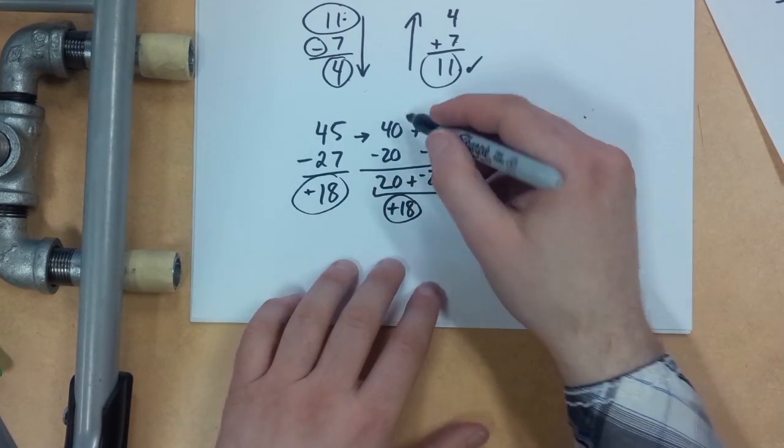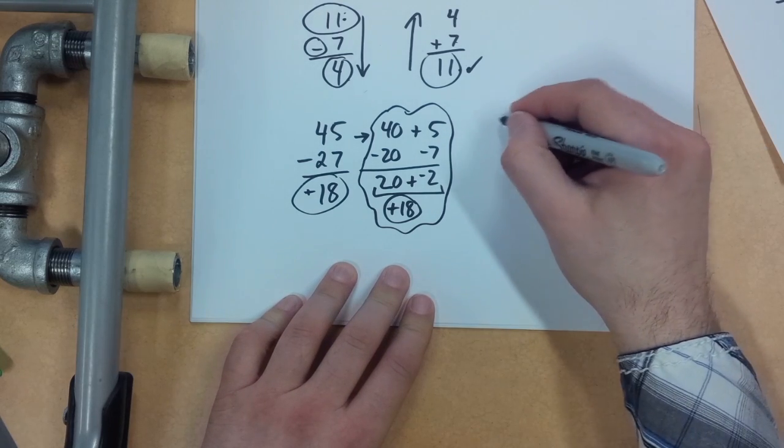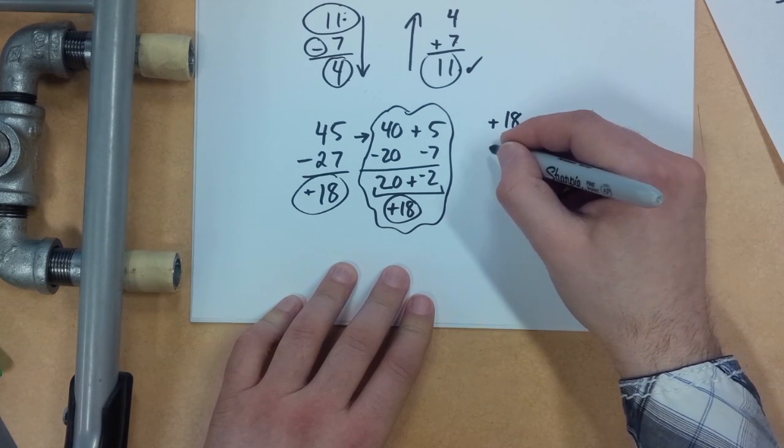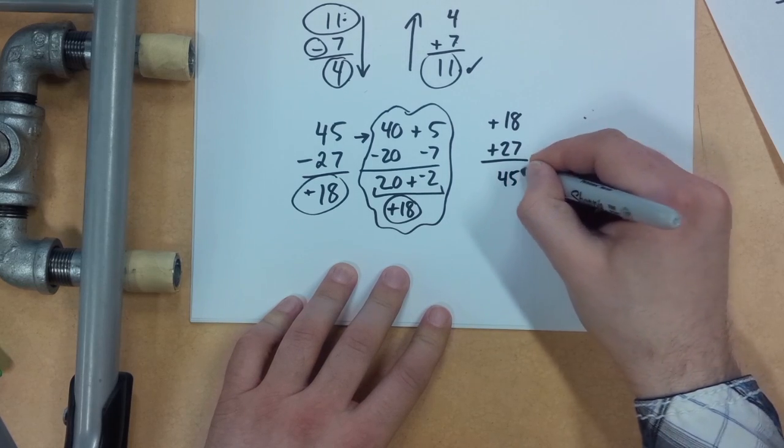Now I don't know for certain if that's correct because maybe I made a mistake in here, right? So I'm going to test it out. Positive 18 plus 27, does that equal 45? Let's see.